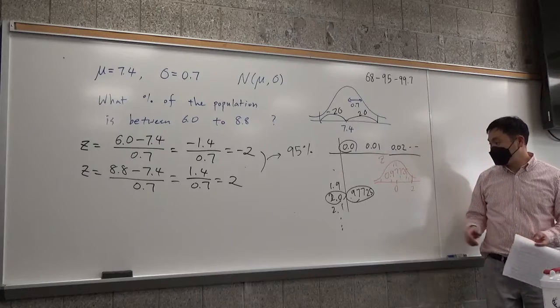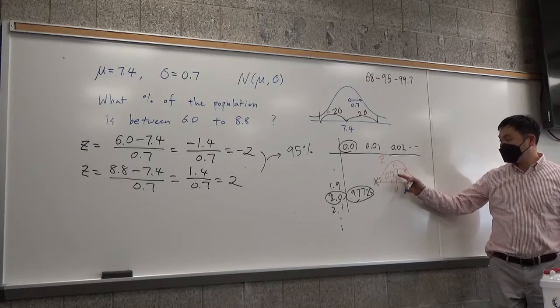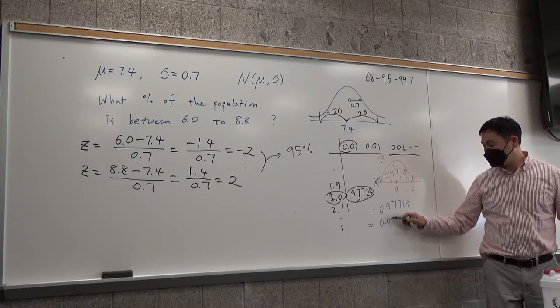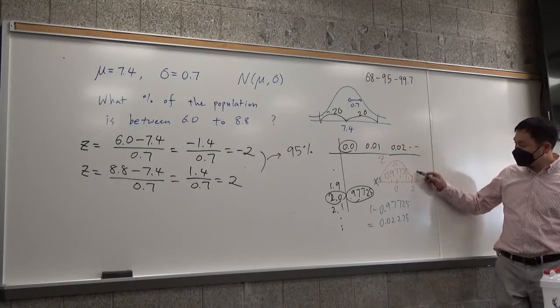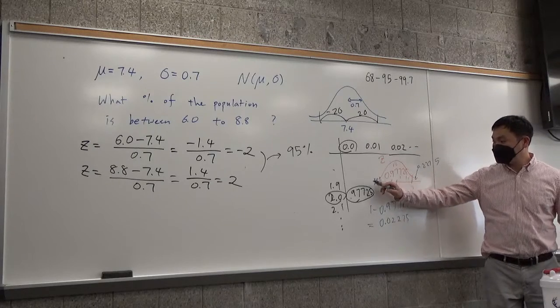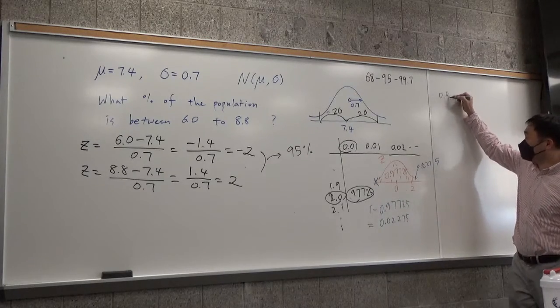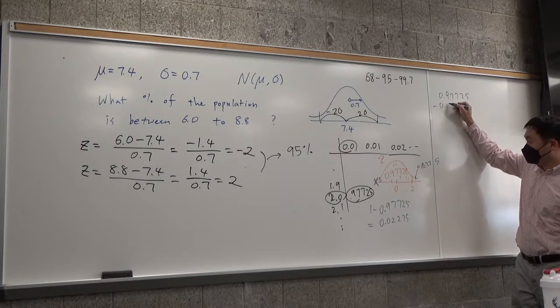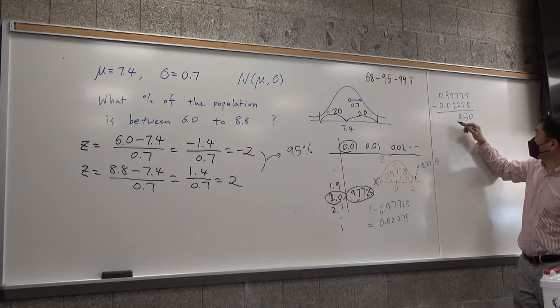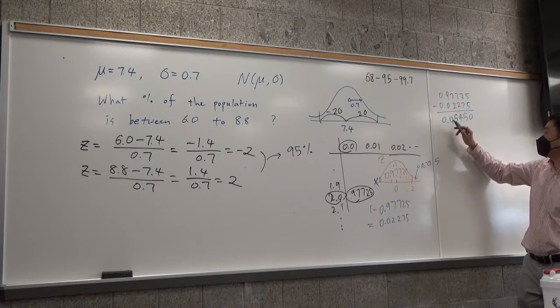So one way to do it would be to realize that what you really want to do is to get rid of this portion, right? So what you can do is you can subtract from 1 minus, so if you do 1 minus 0.97725, that's going to be 0.02275, right? So we know that this much is 0.02275, and that means by symmetry, this much is also 0.02275. So you want to get rid of that. So what you want to do is 0.97725 minus 0.02275, and you get 5, and then 4, and then, let's see, 5, 0.95450.